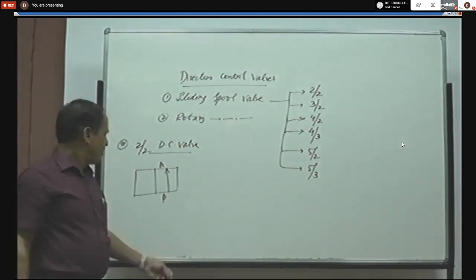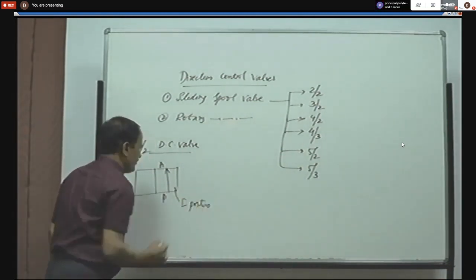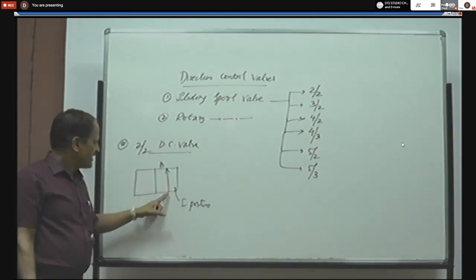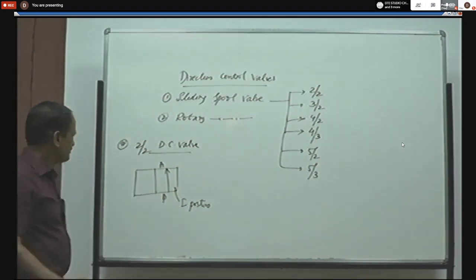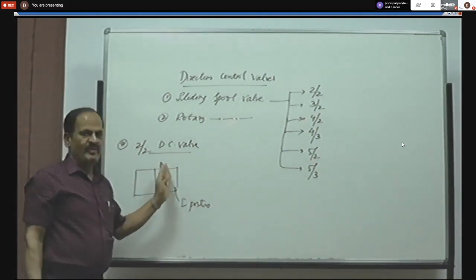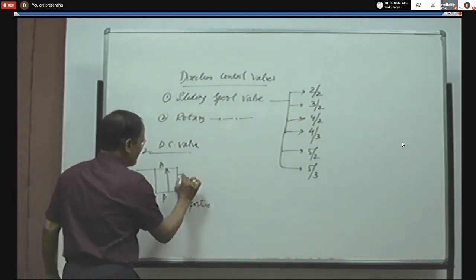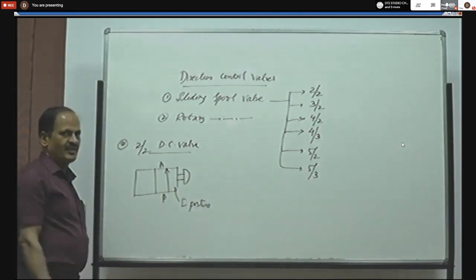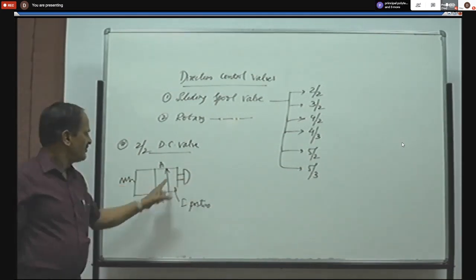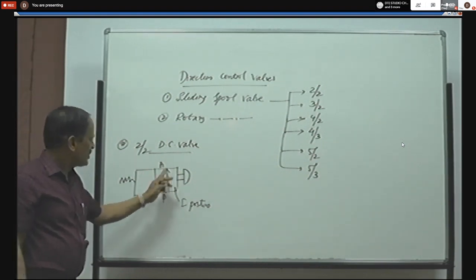The symbolic representation of a 2x2 DC valve: each position is represented by a box. Since it has two boxes, two positions are required to change the ports, and in each position there are two ports — port B and A. The direction of flow is represented by an arrow. In the first position, flow takes place from pressure port to the working port. A is the working port connected to the actuator; B is the pressure port connected to the pump. By pressing the push button, B and A are connected, so fluid flows from pump to the working port.